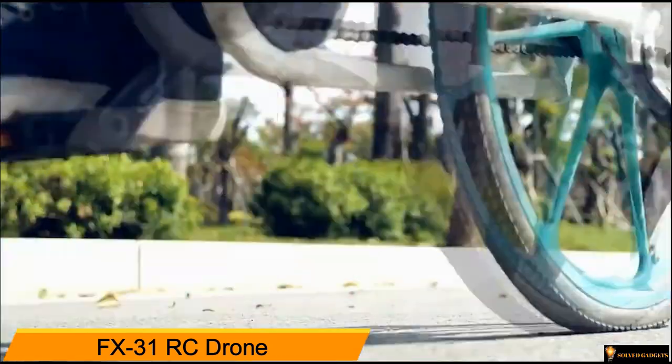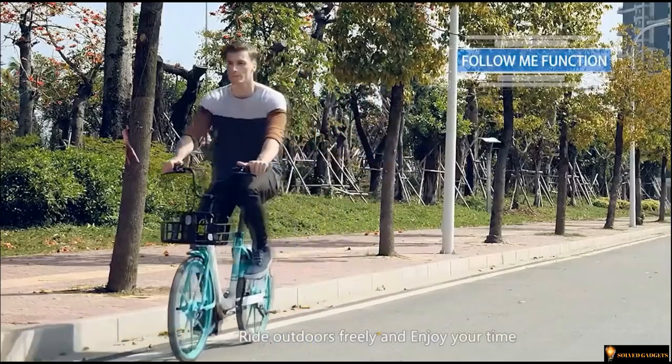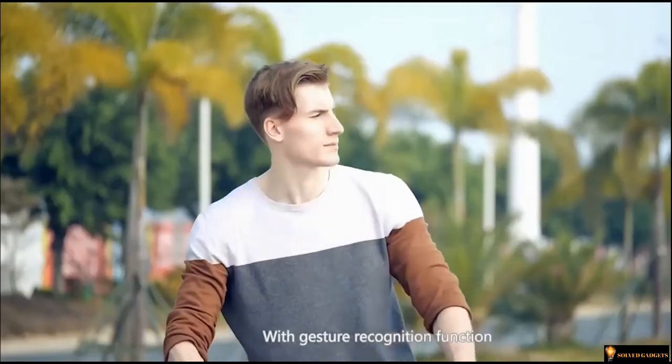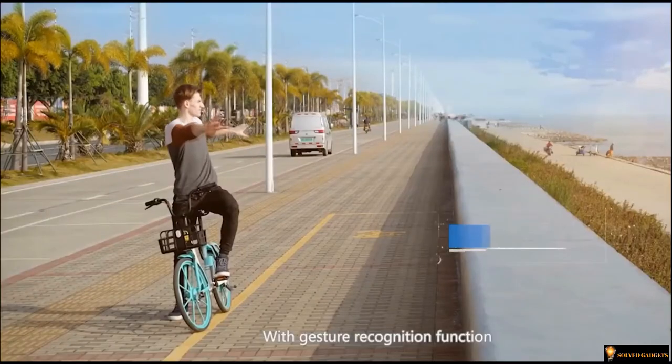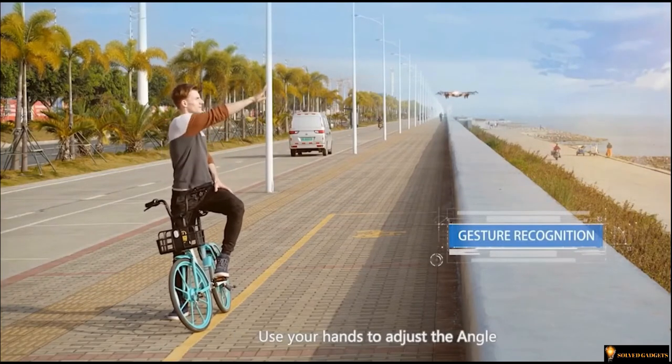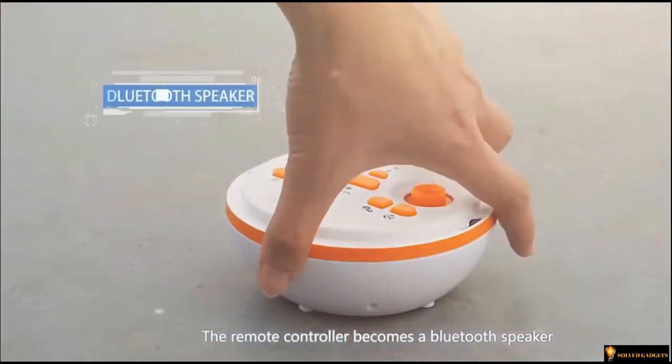FX-31RC Drone. In front of the plane, automatically take photos and record video. Track a flight path on the screen. The quadcopter will fly like this route accordingly, with takeoff, landing, return, emergency key. It is more convenient to operate the drone when meeting unexpected conditions. Suitable for beginners.